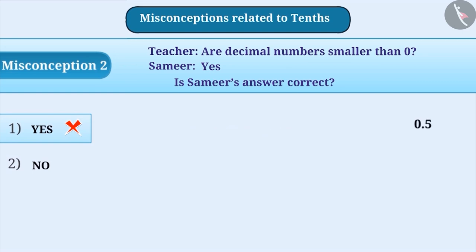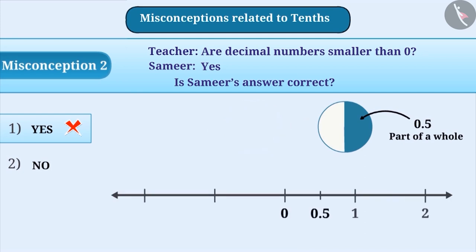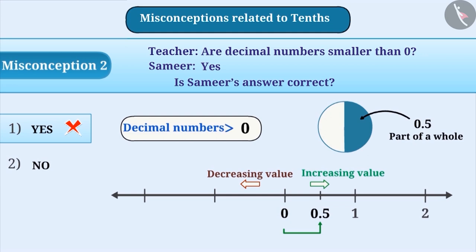The correct understanding is that decimal numbers represent part of a whole which is greater than 0. If we represent a decimal number on the number line, then we will observe that it will be positioned on the right side of 0. As you know, that on the number line, the value of a number increases while going towards the right and decreases while going towards the left. Since each decimal number is represented on the right side of 0, decimal numbers are greater than 0. Therefore, option 2 is the correct answer.